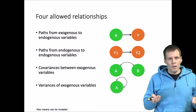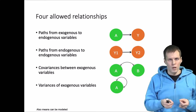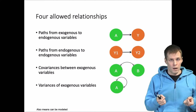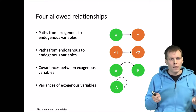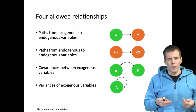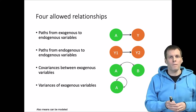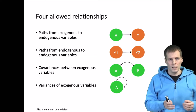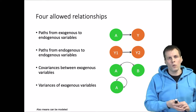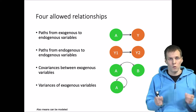Beginners often wonder why we cannot have correlations between endogenous variables, or between an exogenous and endogenous variable, as model parameters. The reason is that all endogenous variables are weighted combinations of exogenous variables in the linear model. Their variance is simply a function of other model estimates and does not need to be separately estimated. For example, if the variance of X is 1 and the variance of Z is 1, and X and Z are uncorrelated, then the variance of their sum is 2 — derived from those exogenous sources of variation.